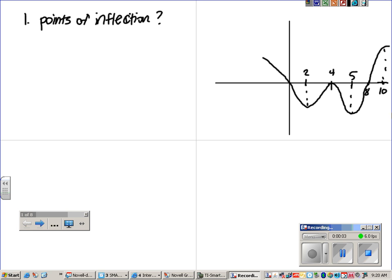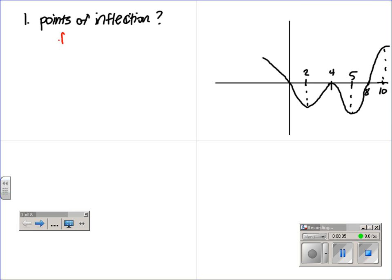All right, for points of inflection, we need to realize that whenever f double prime is positive, this means that f prime is increasing and f is concave up. When f double prime is negative, this means f prime is decreasing and f is concave down.